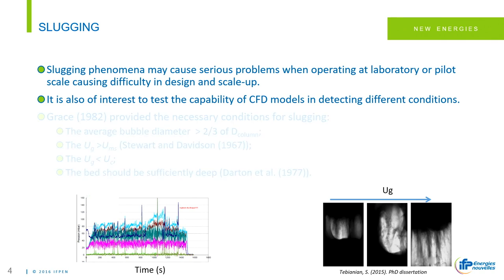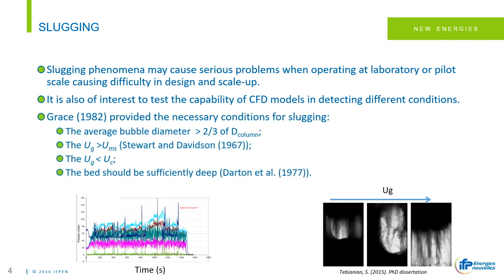Dr. Grace gave the necessary conditions for slugging: the average bubble diameter should be large enough compared to the column diameter; the superficial gas velocity should be higher than the minimum slugging velocity; it should be lower than the superficial gas velocity at the transition to the turbulent regime; and the bed should be sufficiently deep. The criteria are given in the references.